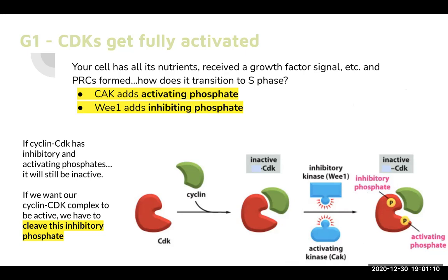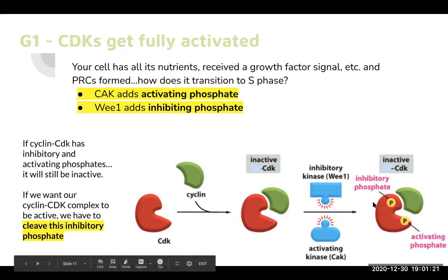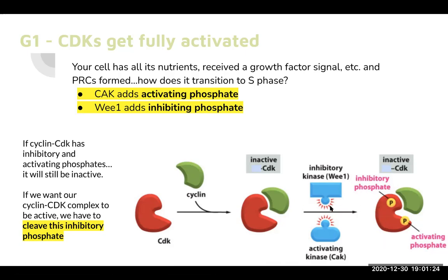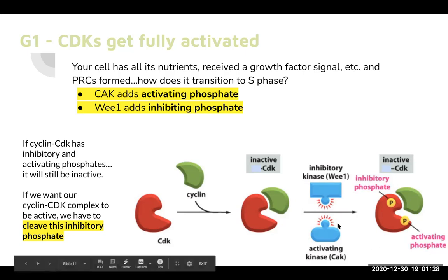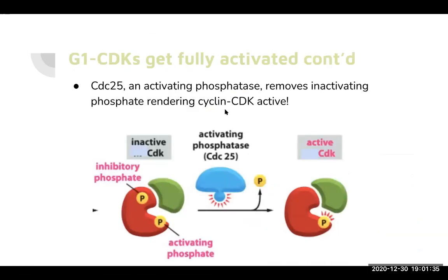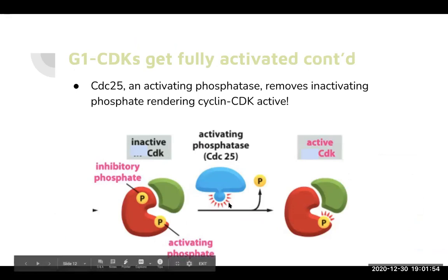When the cell cycle is halted and the issue is resolved — DNA repaired, nutrients obtained, cell grown to the right size — you need to regain CDK activity. Right now it's inhibited because Wee1 added its inhibitory phosphate. To regain function, that inhibitory phosphate must be released. What does that is CDC25, an activating phosphatase that removes the inhibitory phosphate. Once CDC25 removes it, all that remains is the activating phosphate, giving you an active cyclin-CDK complex once again.